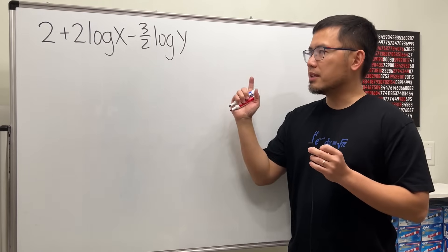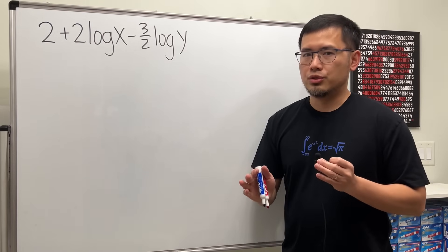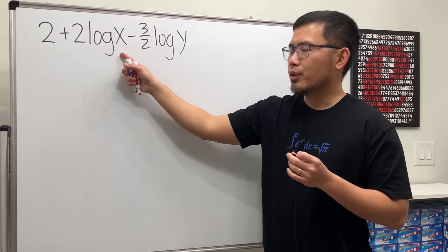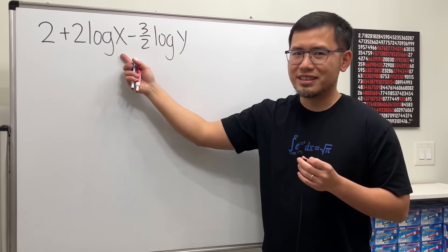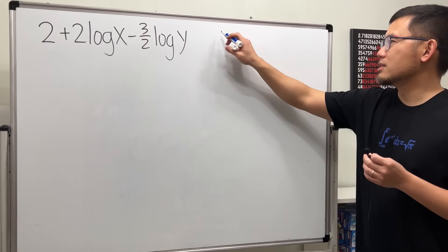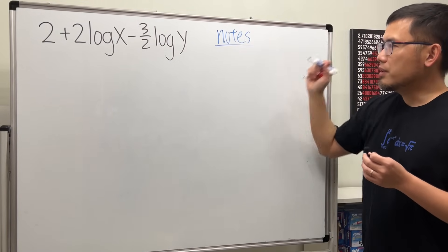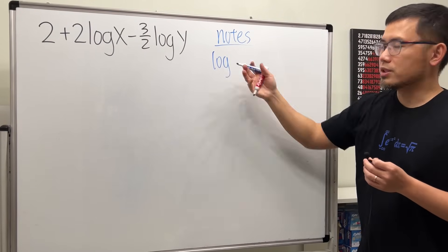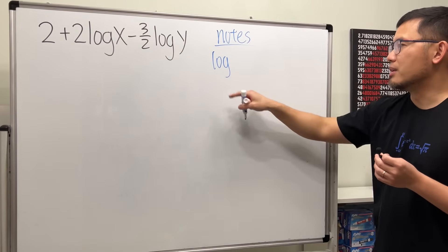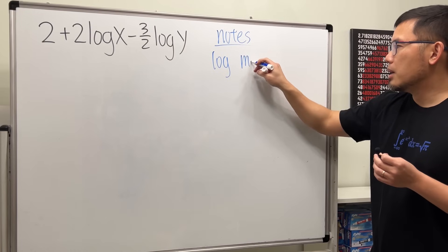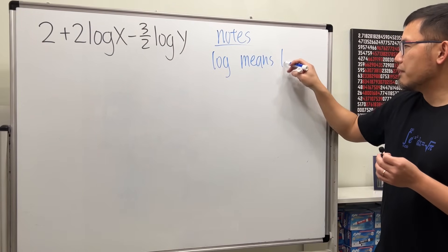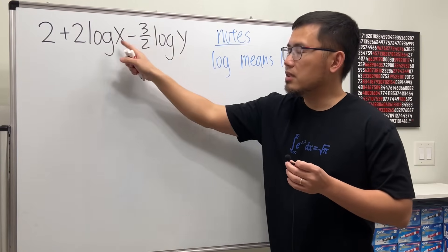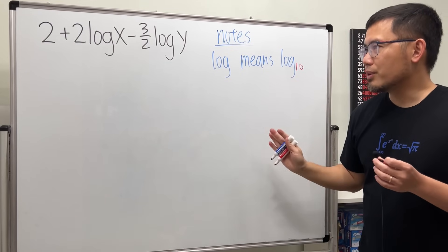First, in order to combine this expression, all the terms should have log, but the first one doesn't. Also, we only have log — we need to know what base we are working with. When we just have log, the base is not missing because we forgot the number; this right here means we have log base 10. So this is like a written 10 here and here.